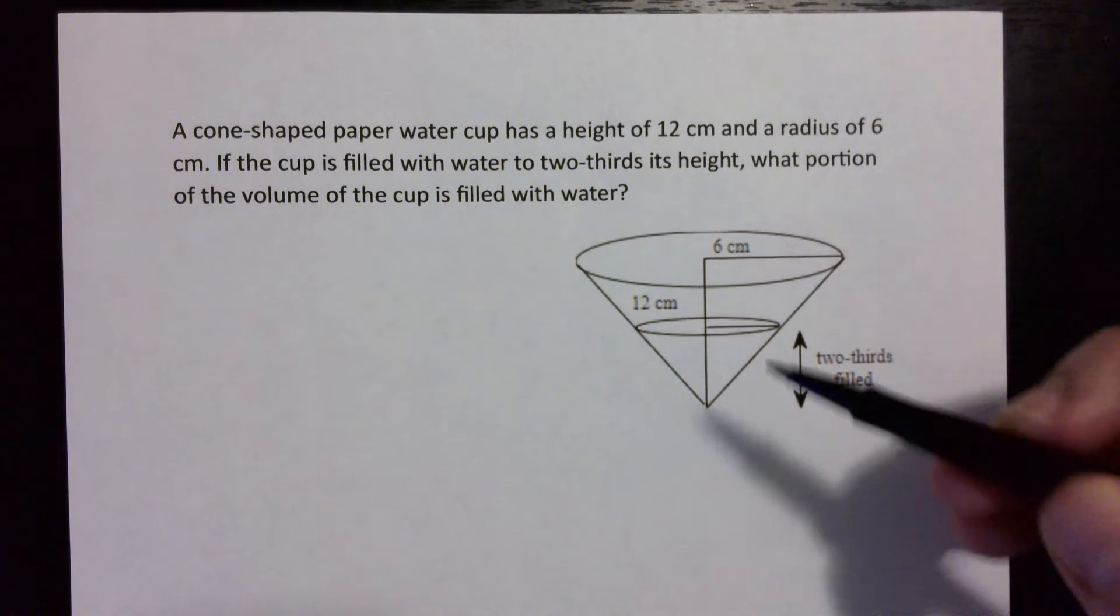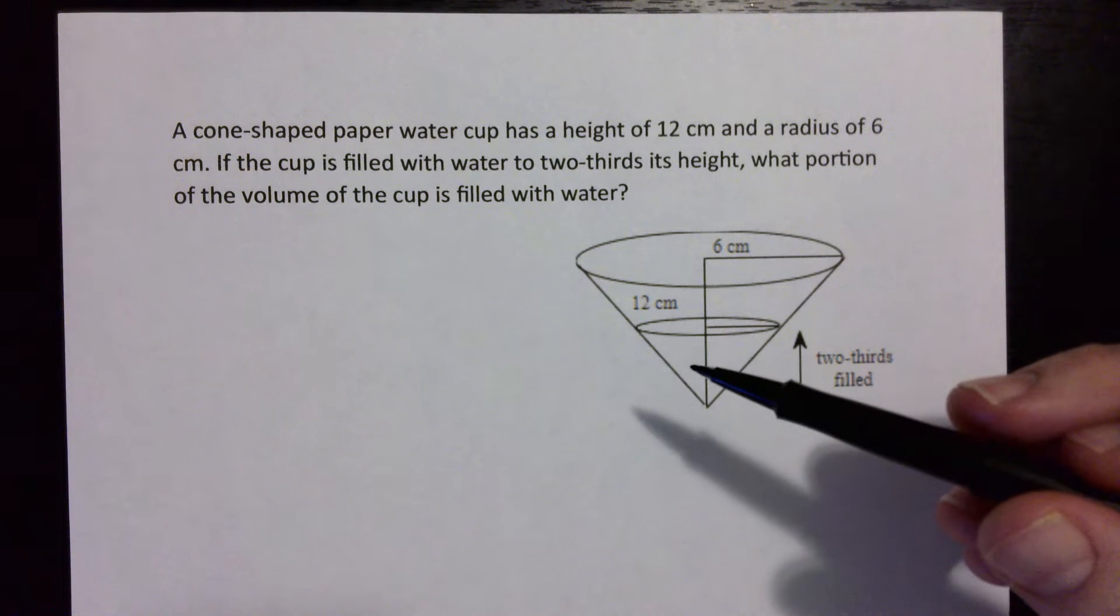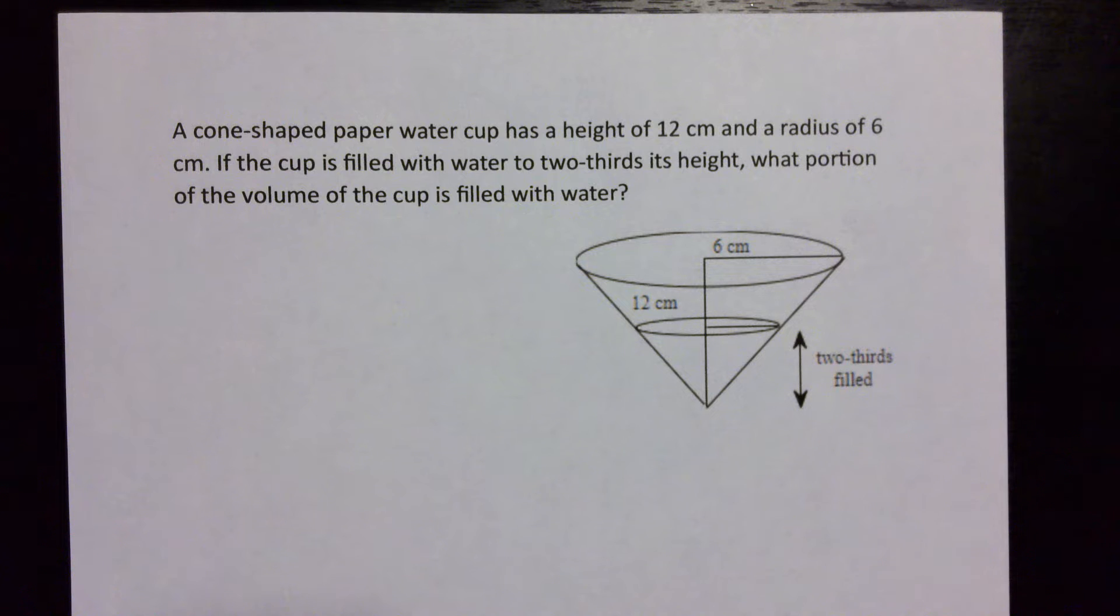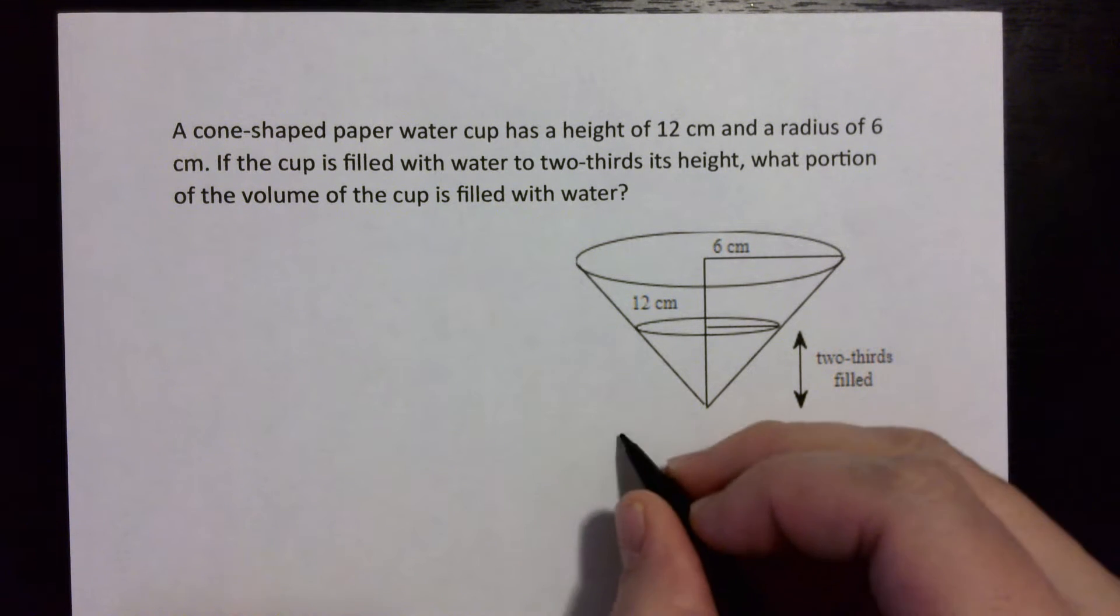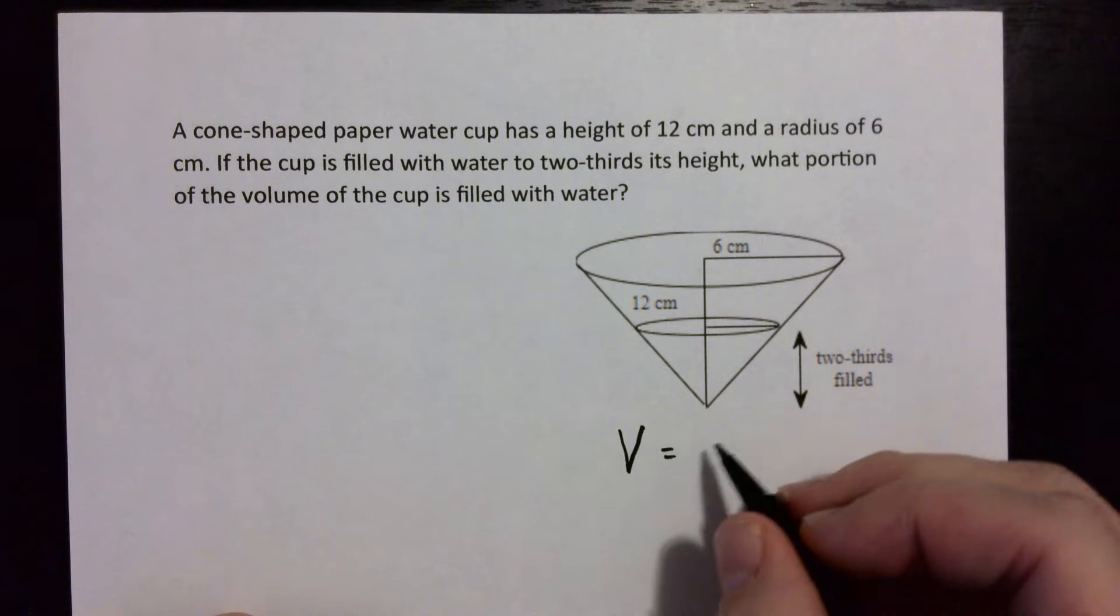Then it says if the cup is filled with water to two-thirds its height, that's represented by this part of the drawing here, what portion of the volume of the cup is filled with water? Okay, so what we need to do is figure out two things: we want to find out V big, which is the volume of the whole thing.